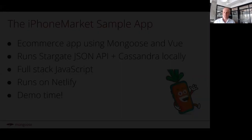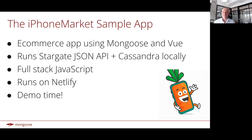Today I'm going to show you a sample app that we built called iPhone Market. It's an e-commerce application. On the back end we use Mongoose, and on the front end there's a Vue front end application. It runs on top of the Stargate JSON API and Cassandra, assuming that you're running those locally. Built using full stack JavaScript, runs on Netlify.